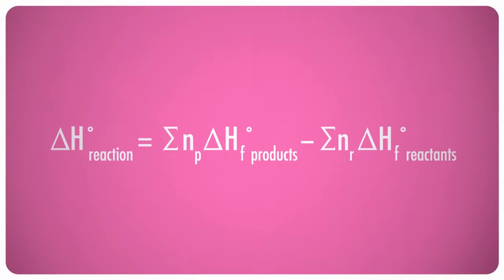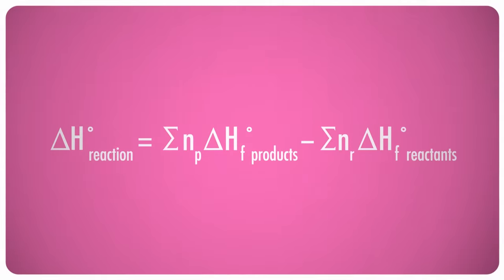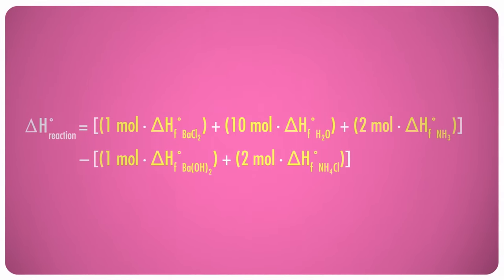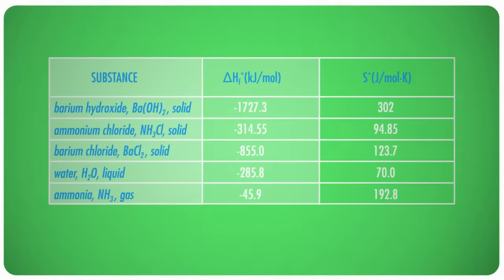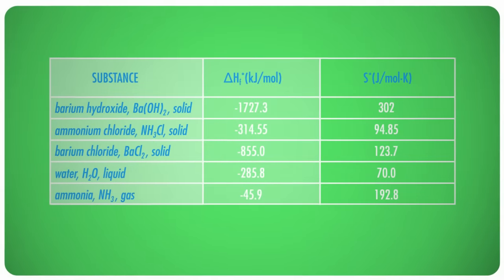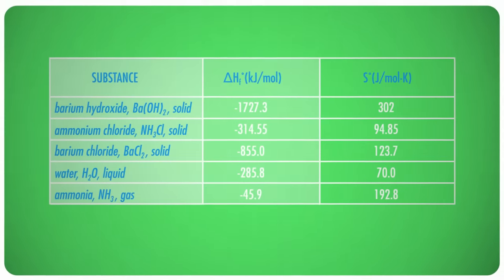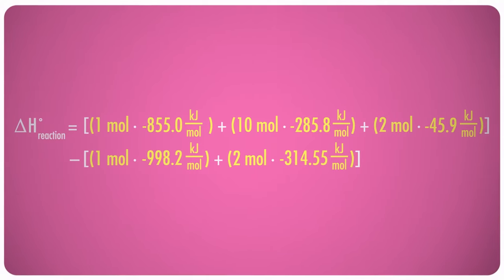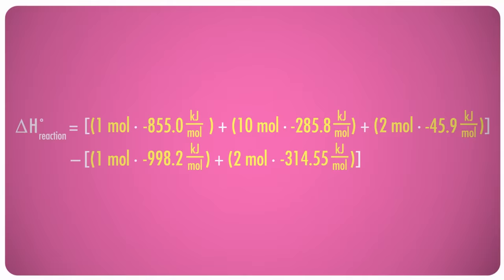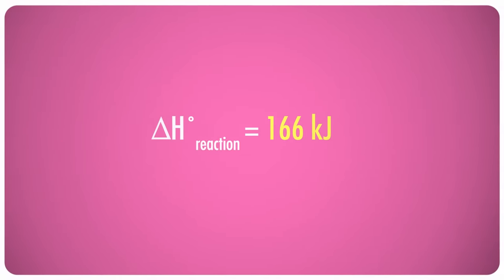First, we'll find the enthalpy change using Hess's law and standard enthalpies of formation. We can use the coefficients from the balanced chemical equation to fill in the number of moles for each substance. Then we have to look up a whole bunch of numbers. Remember, you can find tables like this online and probably in the back of your chemistry textbook too. When we plug the standard enthalpies of formation into the formula and do the math, we find that the change in standard enthalpy is plus 166 kilojoules.